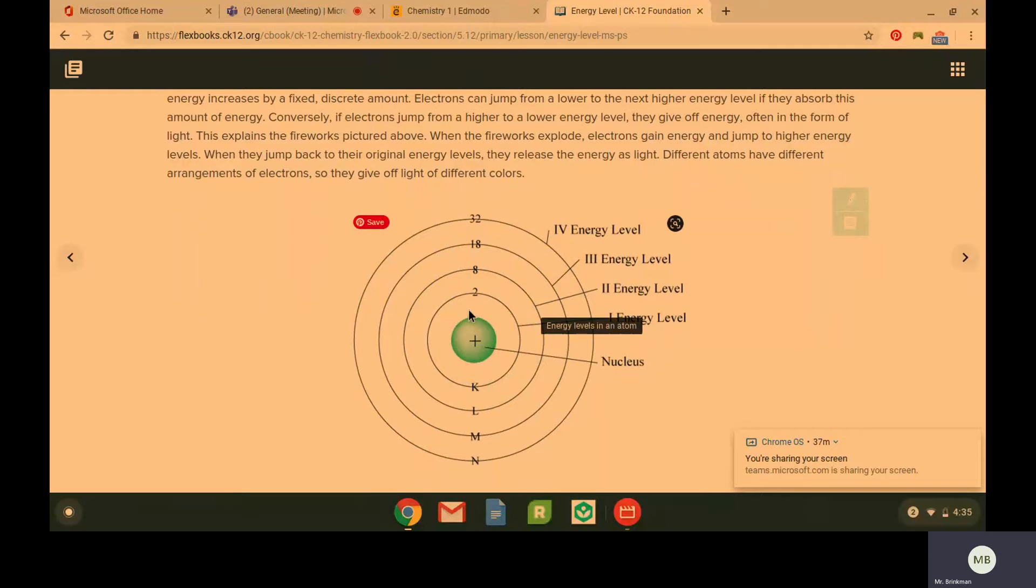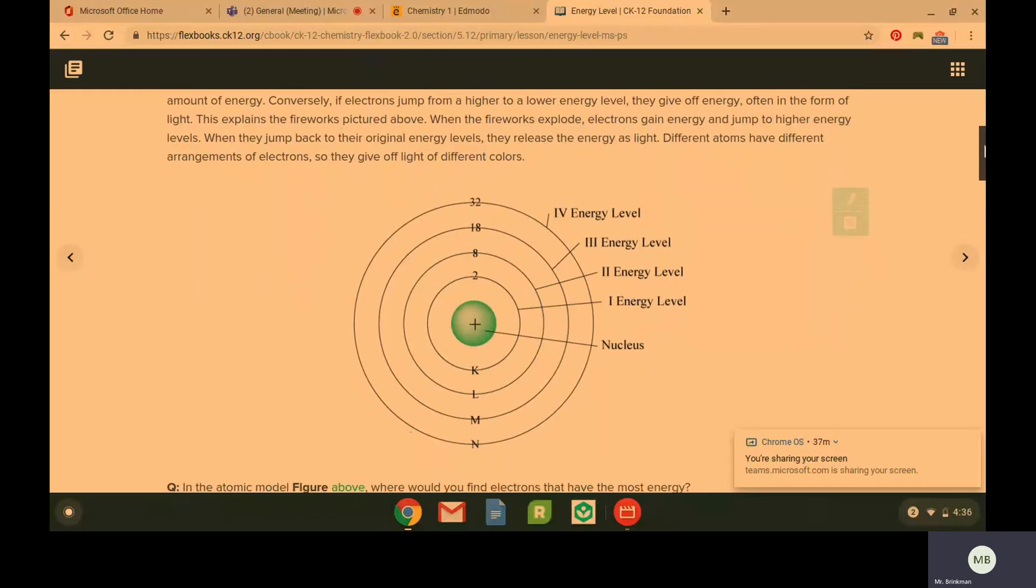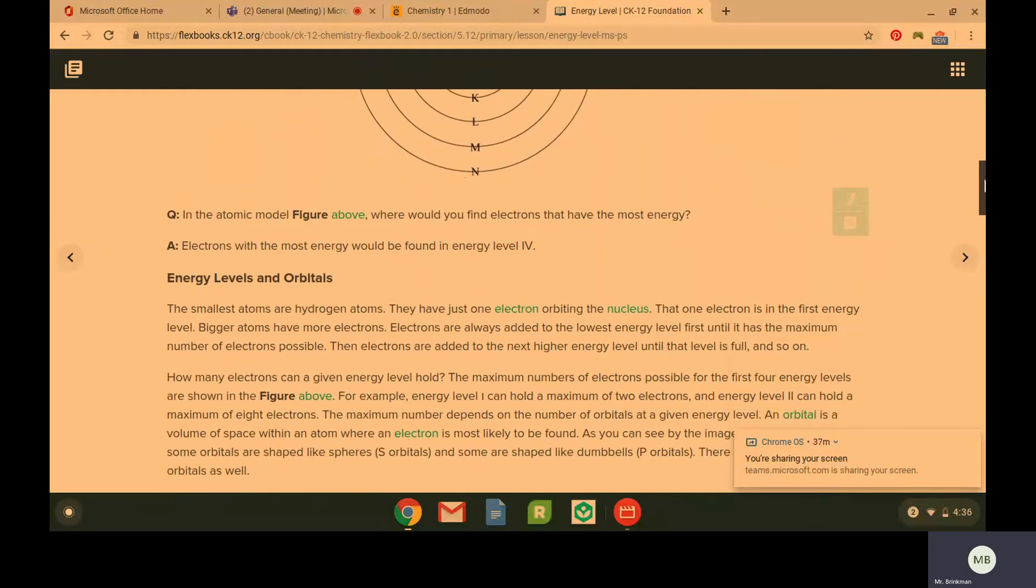So fireworks are going to, when fireworks explode, it's the electrons gaining energy and jumping to a higher energy level. And then when the electrons return to their original energy levels, they are going to release this energy as different colors of light. That's how fireworks work.